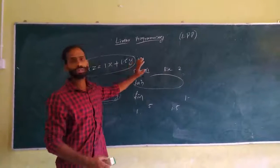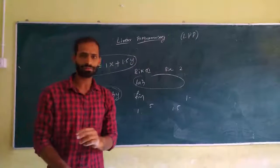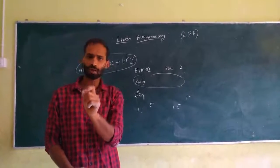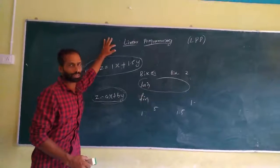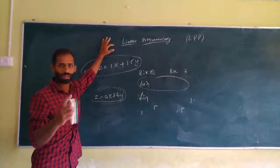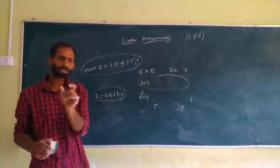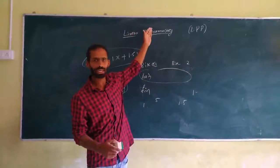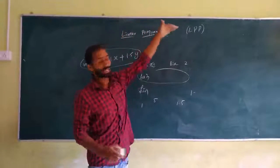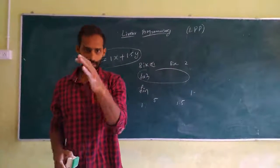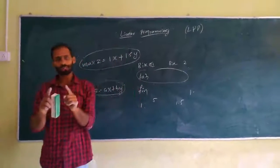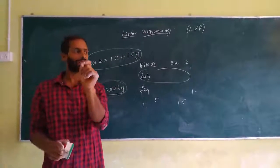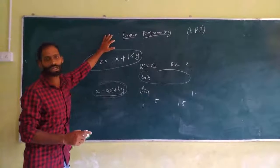Next is the optimization problem. A problem which seeks the maximum or minimum value of a linear programming problem is called an optimal solution. In LPP we have many methods, but at this level you have only one method to find the maximum or minimum value — that is by graphical method, also called the corner point method.